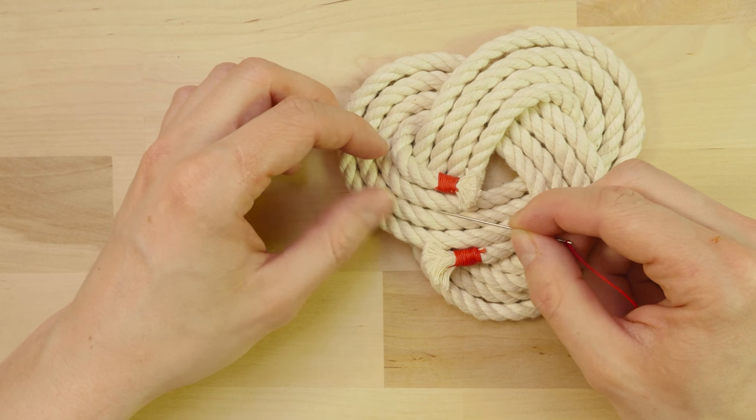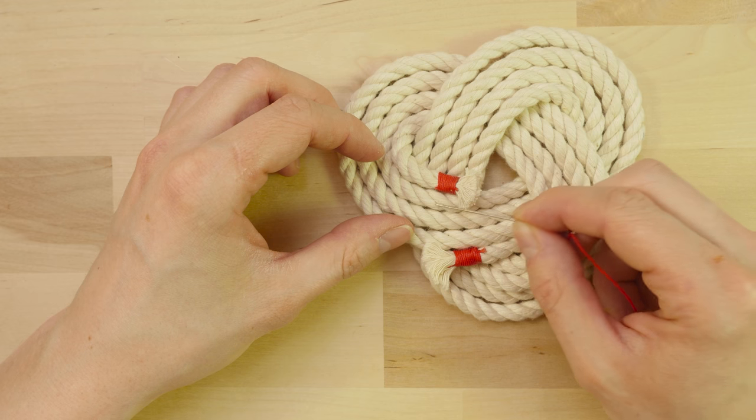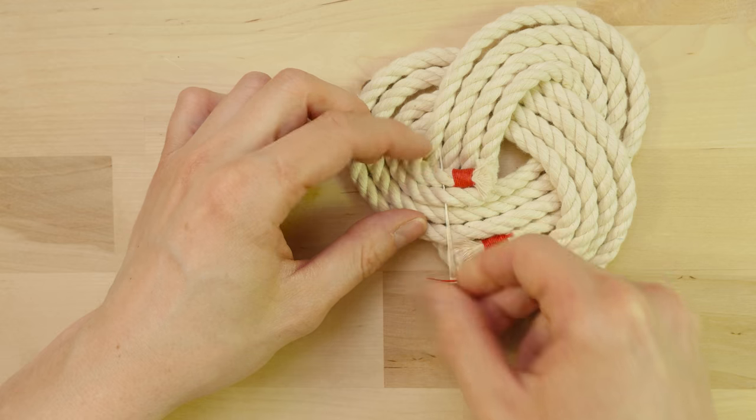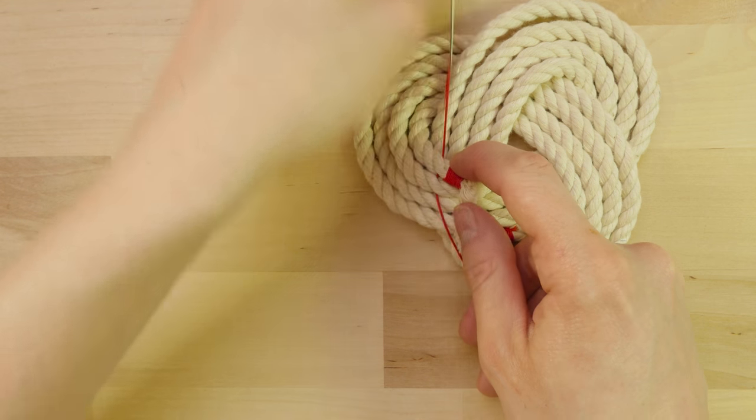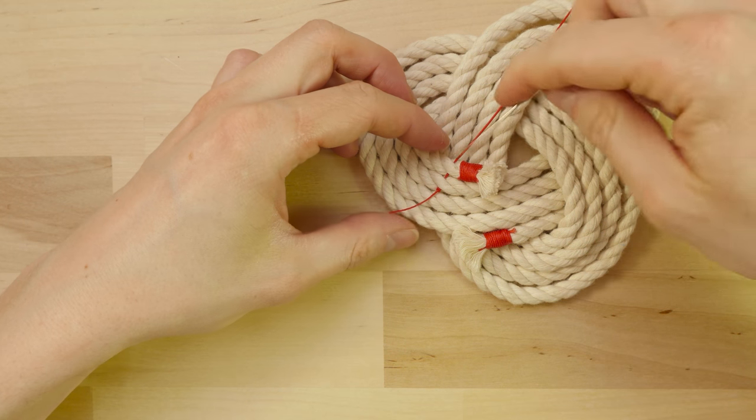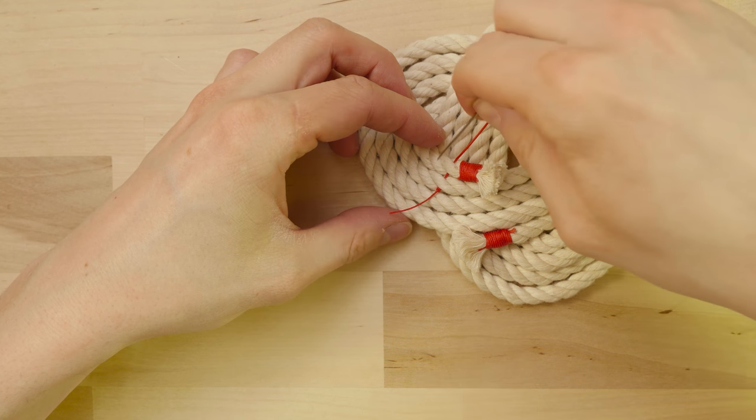Start under your second pass and go up. Then down, through all 4 of your passes.